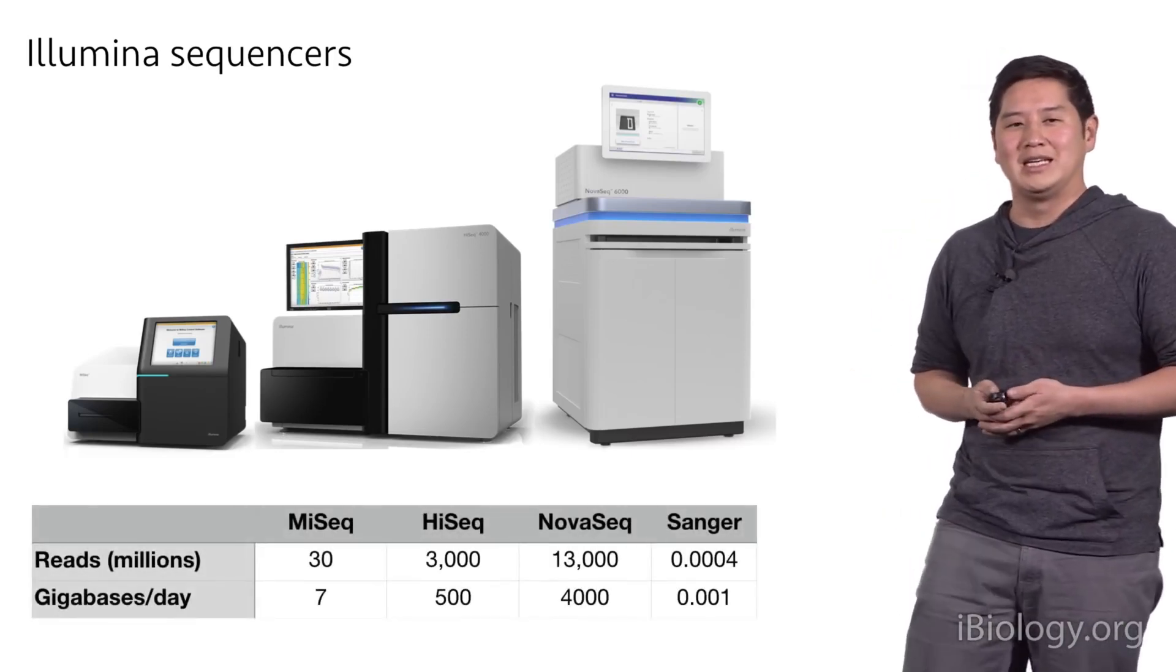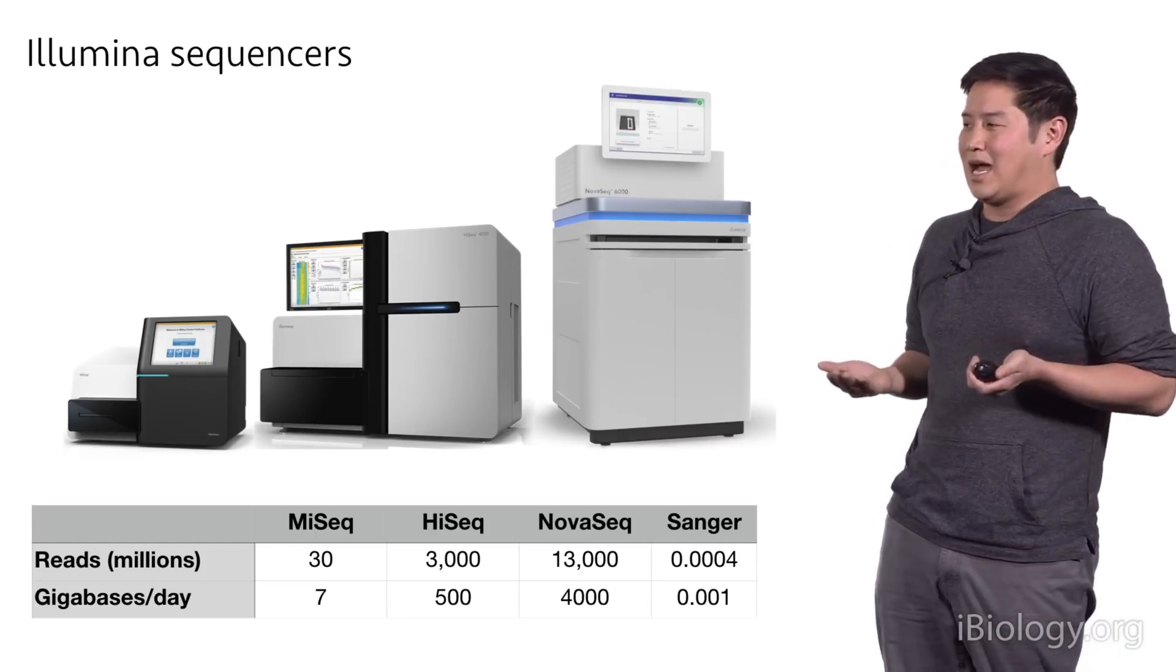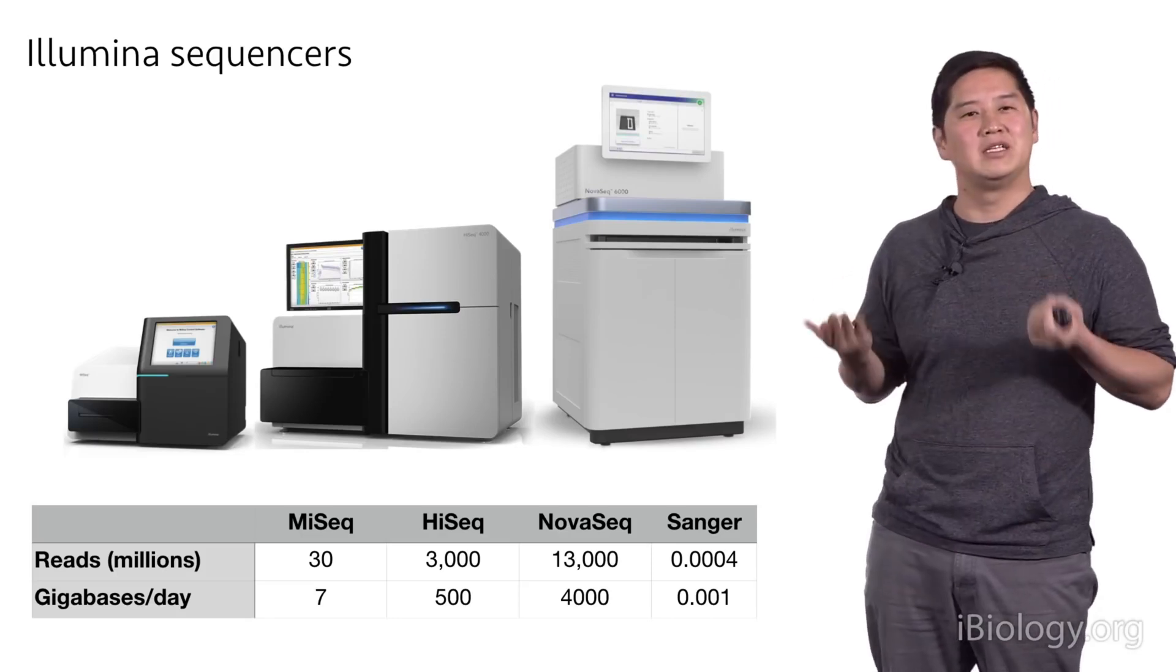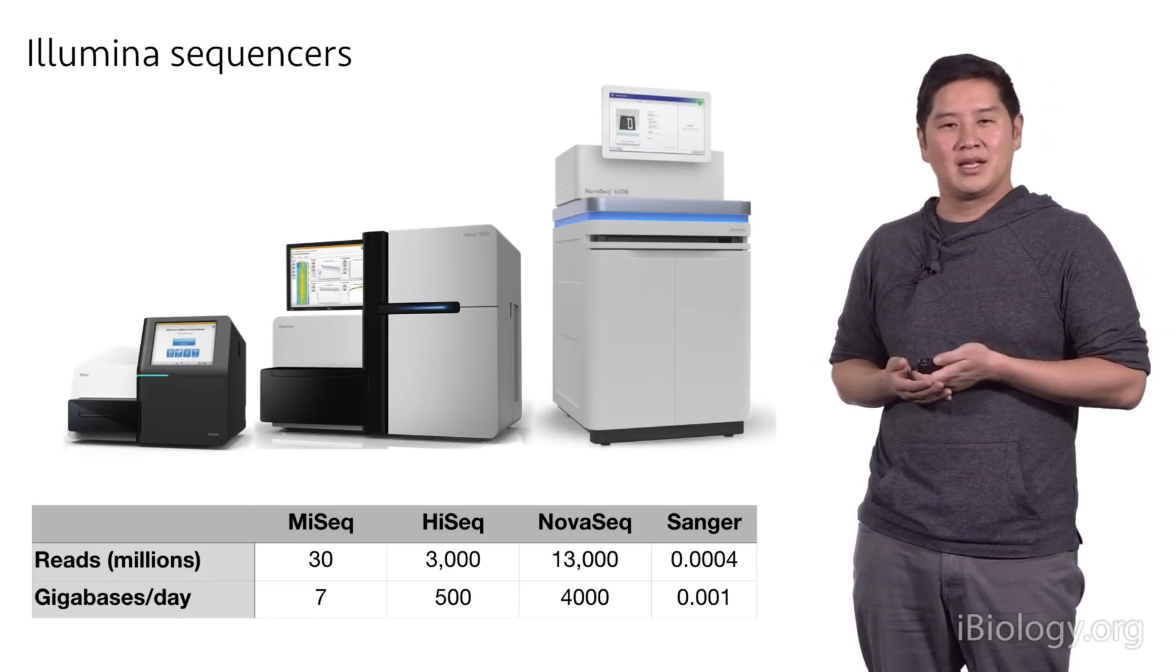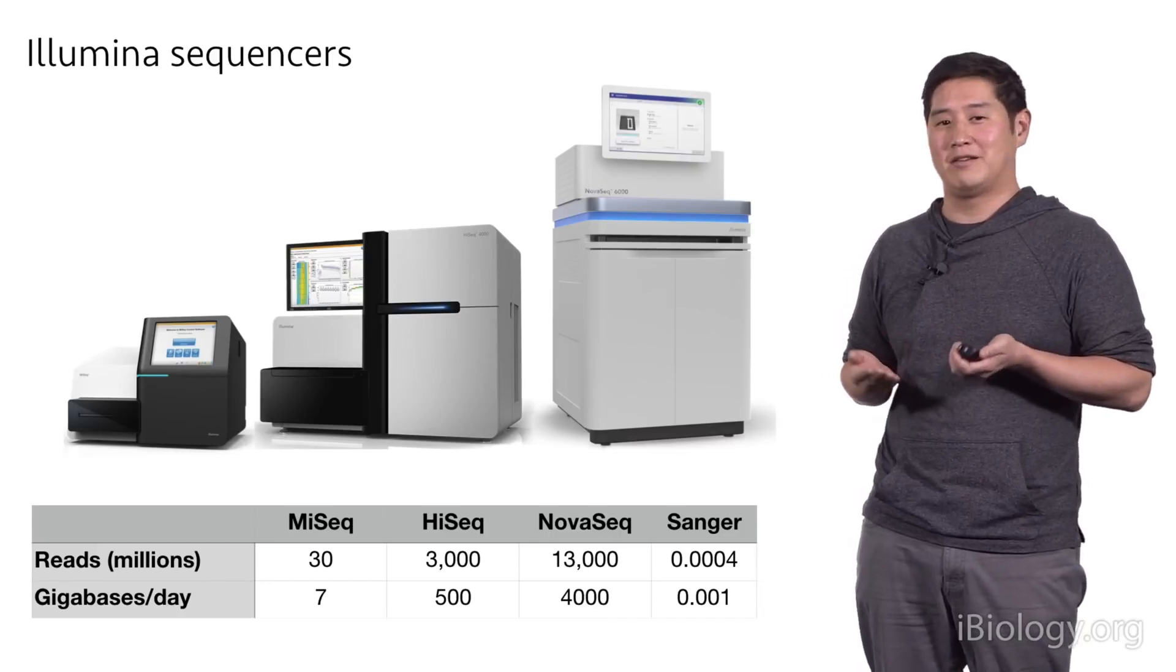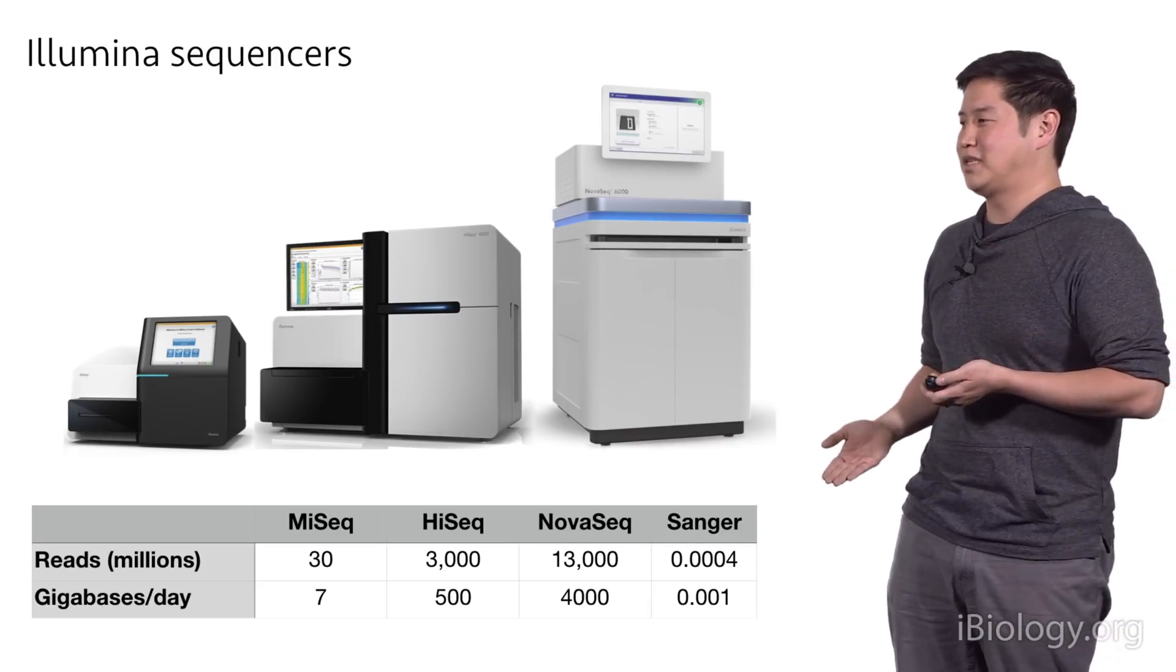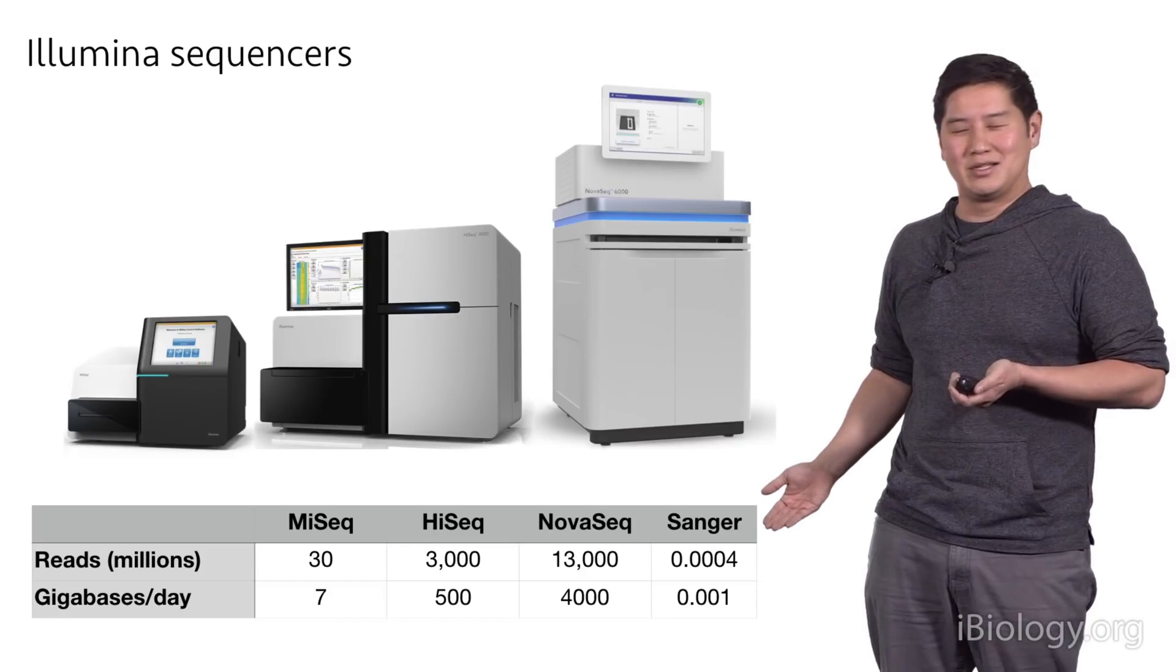If we compare the output of these machines and compare them with the Sanger sequencing platforms, we can see just how much more sequence we can generate from these instruments. If you just look at how many reads you can get from a single run, the MySeq generates 30 million reads, the HiSeq generates 3 billion reads, the NovaSeq generates 13 billion reads, while the Sanger sequencing system generates about 400 reads. And so it's a huge difference.